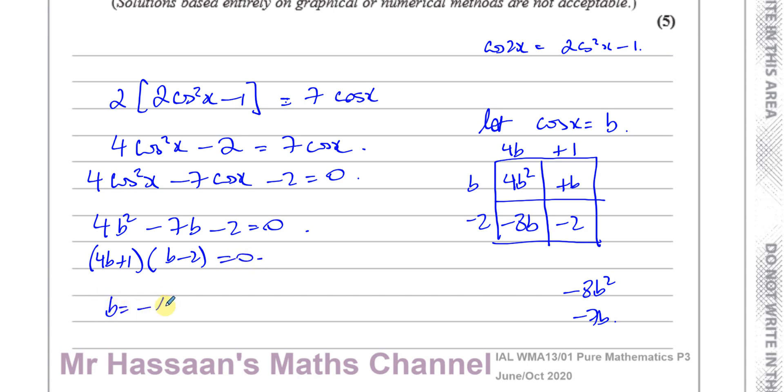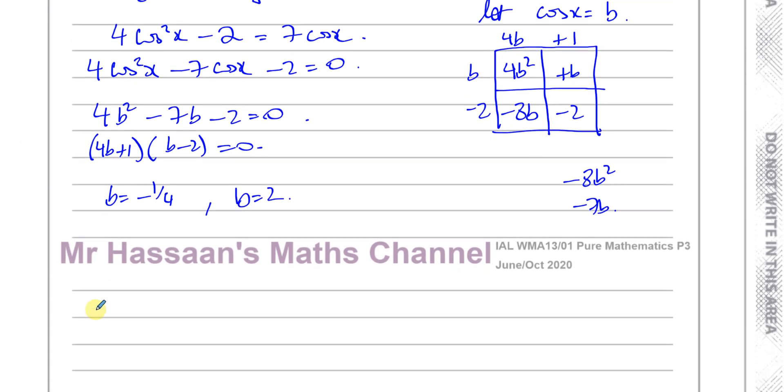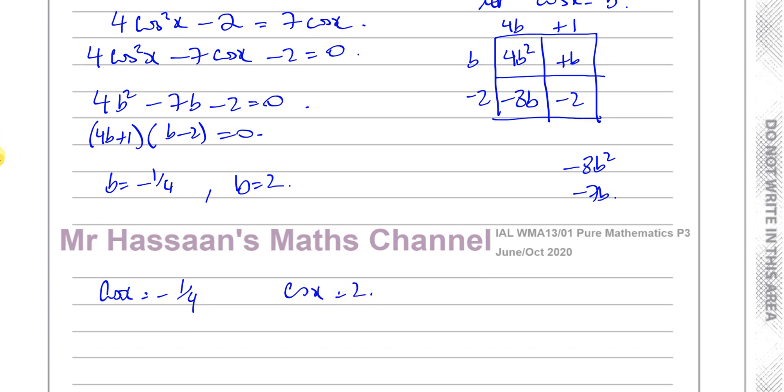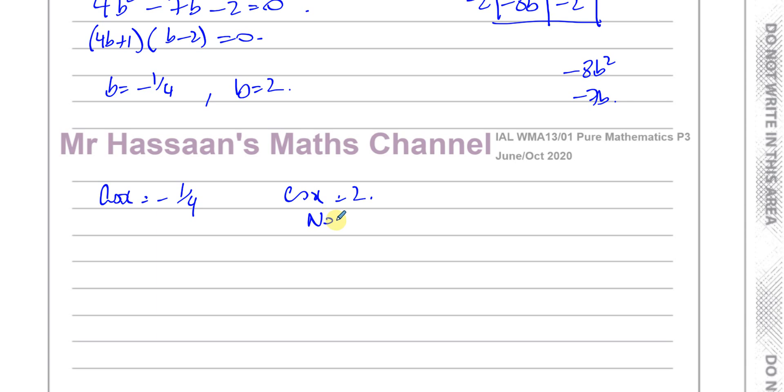So I end up with b equals negative a quarter and b equals 2. I've said let cosine x equals b so I can now say that cosine x equals negative a quarter and cosine x equals 2. Now cosine x equals 2 has no solution because cosine x never reaches 2, however cosine x equals negative a quarter will give me a solution so x equals the inverse cosine of negative a quarter.